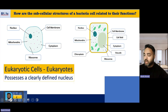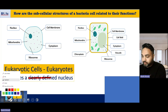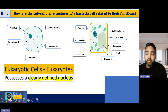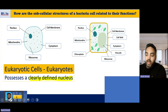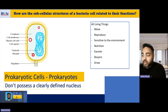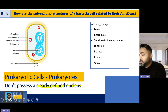Eukaryotic cells are cells that have a clearly defined nucleus. The way to remember it: 'you' — as in me or you — we have eukaryotic cells. Prokaryotic cells are cells that do not possess a clearly defined nucleus. Things like bacterial cells do not possess a nucleus, even though they're living things.